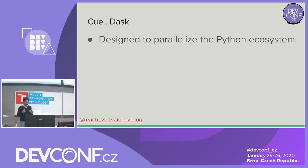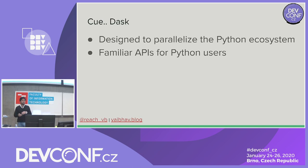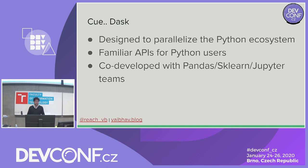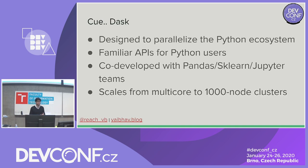That's where Dask comes in. Dask is designed to parallelize the Python ecosystem. It has familiar APIs for Python users, and Python is arguably the world's easiest language to pick up — a hello world program is literally just 'print hello world.' For those who've been working within the Python ecosystem, Dask was co-developed by contributors from Pandas, scikit-learn, and Jupyter teams — the best of the best working together to build a library for distributed workflows. And this scales from a single multi-core computer all the way to thousands of nodes in a cluster.